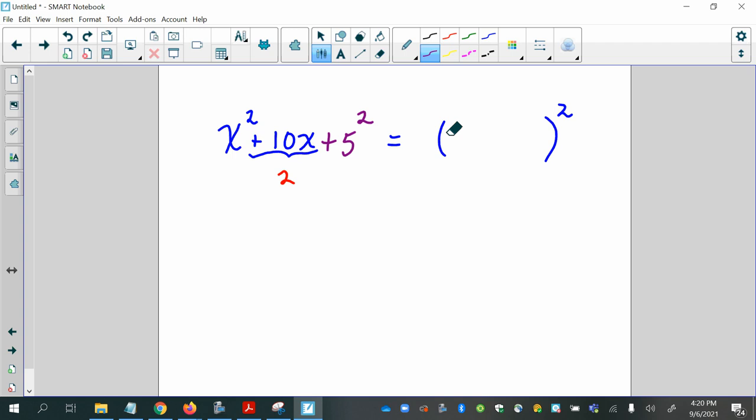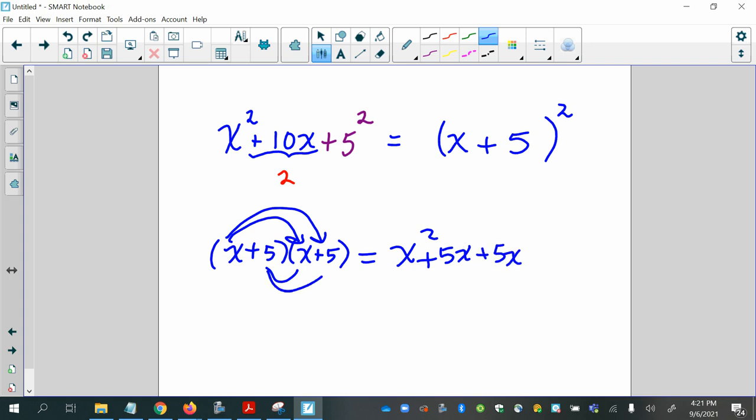Now if I add 5 squared, then I will have a polynomial that factors out to x plus 5 quantity squared. Let me prove it. So we're going to multiply out the first two terms, give me x squared. The outer terms give me 5x. The inner terms give me 5x again. And the last two give me 25.